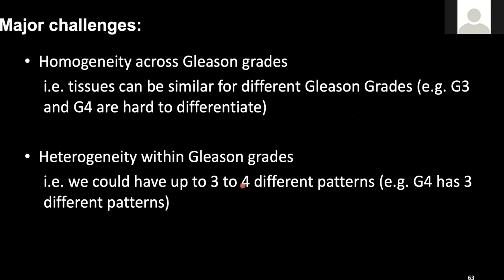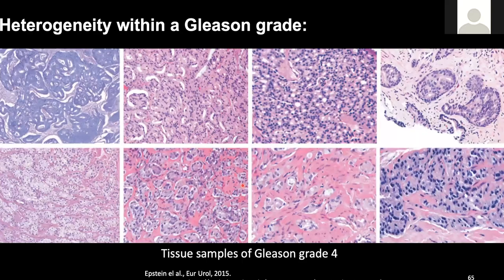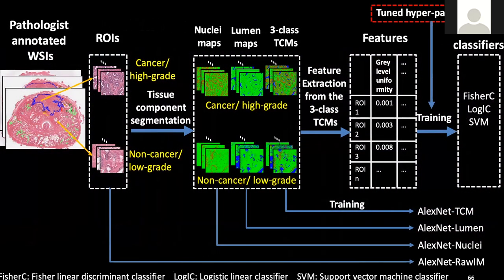The major challenge for this problem is the homogeneity across different grades, which makes them very hard to differentiate, as well as heterogeneity within the same grade. As I show in the examples here, previously we were trying to differentiate normal tissue and cancerous tissue, but now we want to differentiate low-grade versus high-grade. Those tissue samples are more similar to each other, which makes it harder. For the same Gleason grade 4, all the samples shown are Gleason grade 4 patterns, yet the system needs to identify all these patterns and correctly label them as high-grade. We use the previously proposed pipeline for cancer detection, replacing the samples with high-grade as positive and low-grade as negative samples.